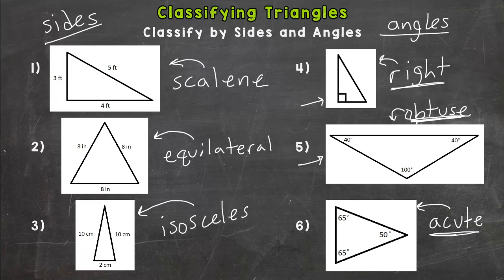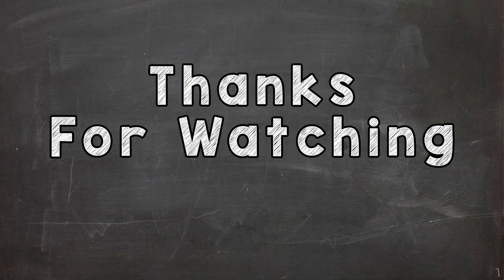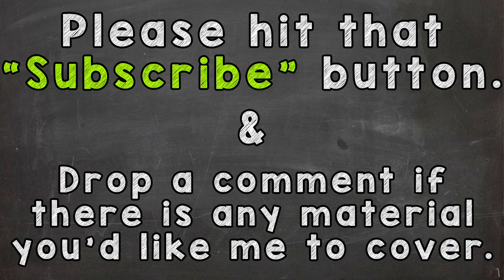So those are the definitions and how you classify a triangle by both sides and angles. What we're going to do now, I created a mastery check video where I give you six triangles and you classify them all by both sides and angles. I dropped that link down in the description. So I will see you over there where you are going to try some on your own to see how you do. Thanks a lot for watching. Have a great rest of your day and until next time. Peace.